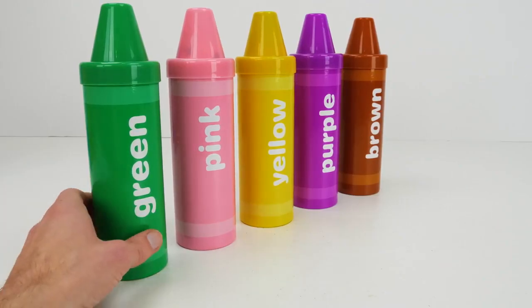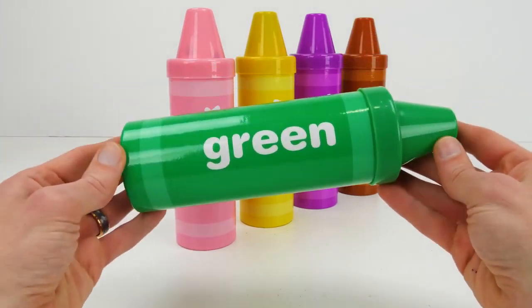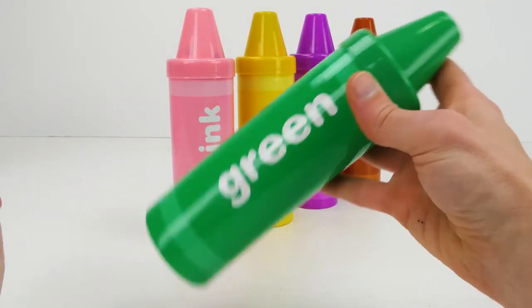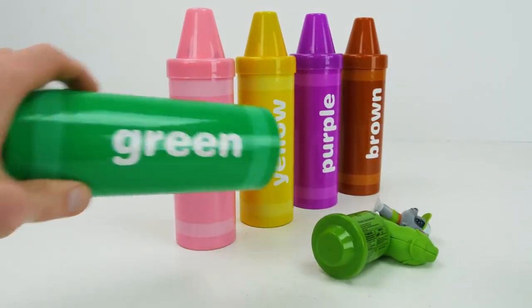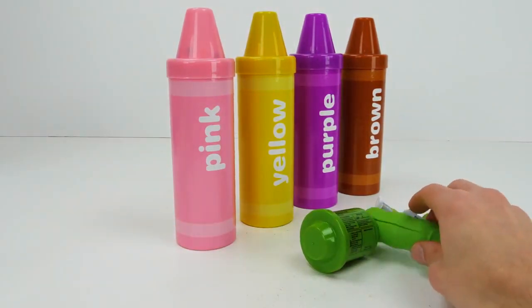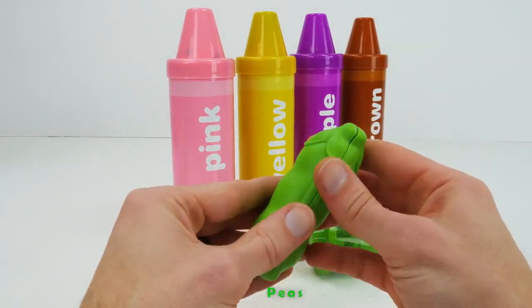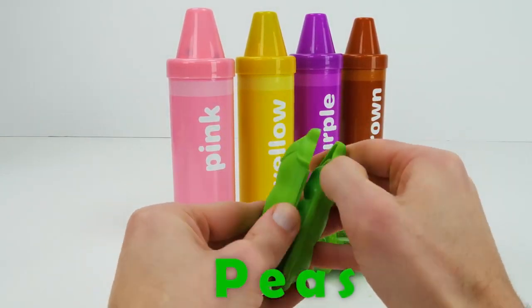Our fourth crayon is green. Peas. Peas come in a pod.